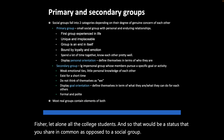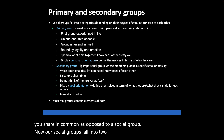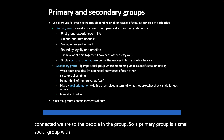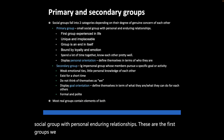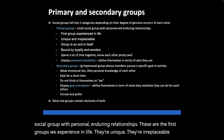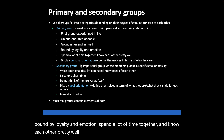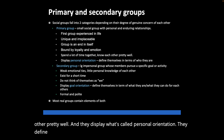Social groups fall into two categories depending on how connected we are to the people in the group. A primary group is a small social group with personal, enduring relationships. These are the first groups we experience in life. They're unique, irreplaceable, and bound by loyalty and emotion. Members spend a lot of time together, know each other pretty well, and display personal orientation — they define themselves in terms of who they are.